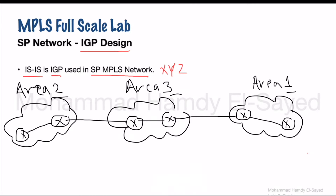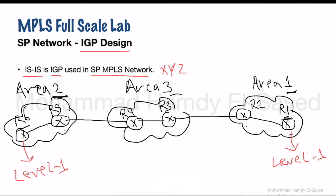If we have this structure of areas, Area 3 is responsible to let Area 1 connect to Area 2. We have three types of levels for ISIS routers. The first is Level 1 — a Level 1 ISIS router can receive and have routing information within its area only. It cannot receive any specific information about routes outside its area. For example, R1 cannot have specific information about the link between R5 and R6, because that link resides in Area 2.